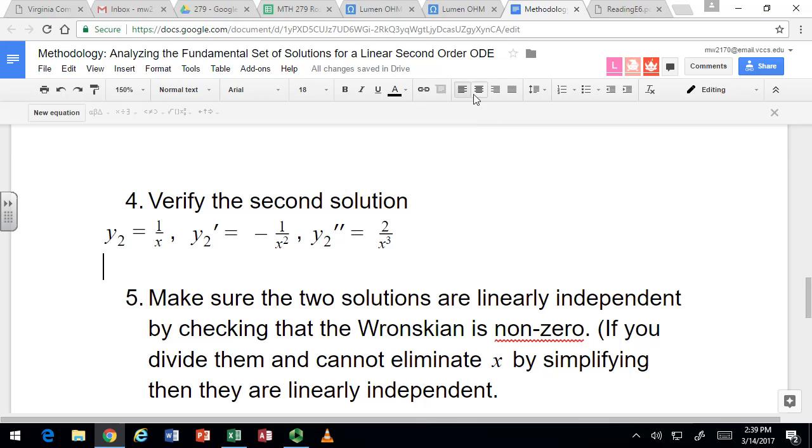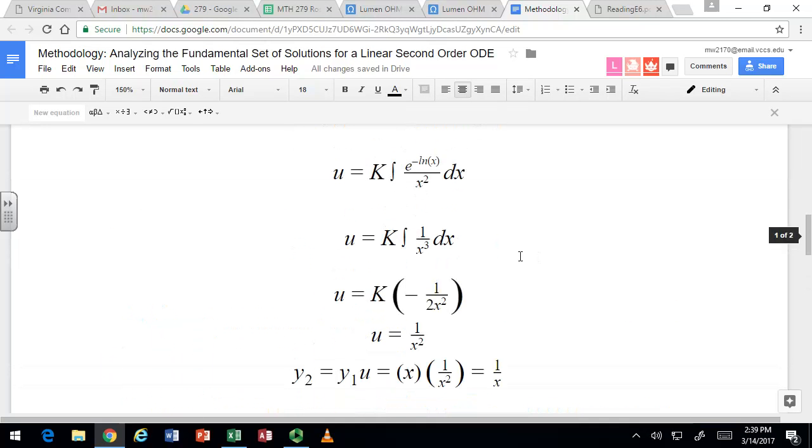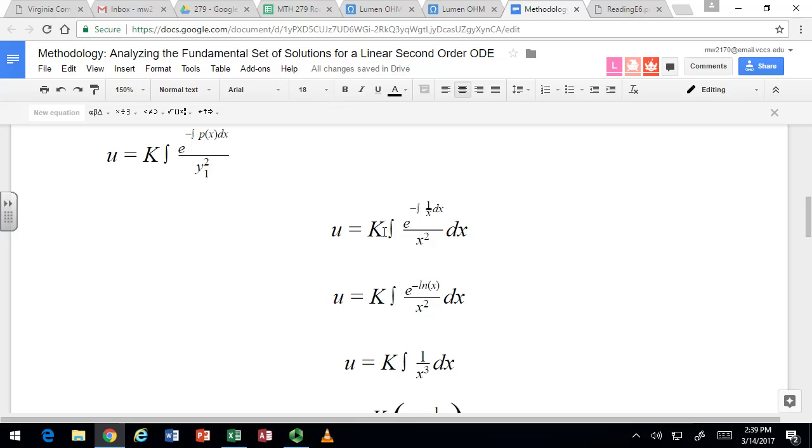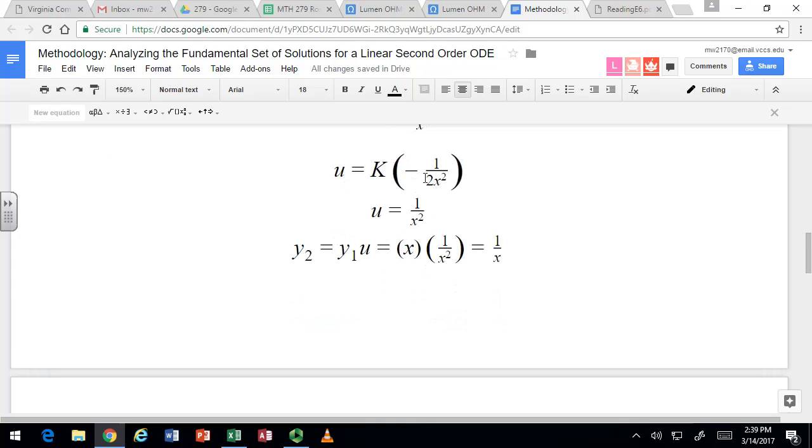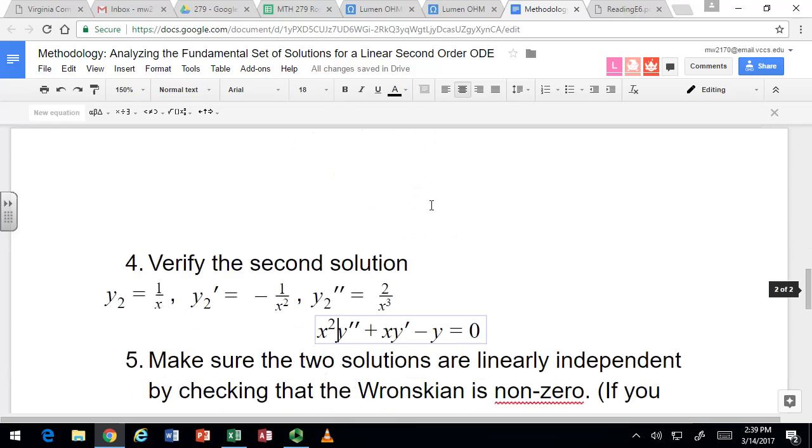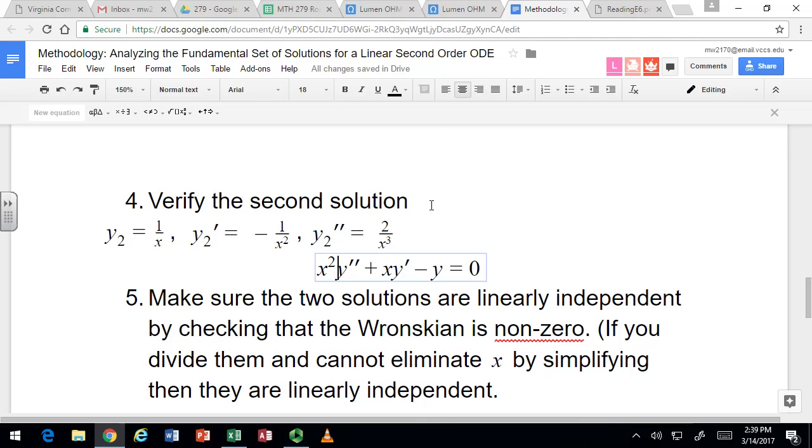Student asks: So for k, we can just make whatever we need to be as long as it's a constant? Instructor: Yeah. So it's good to wait till the end there and then see what you'd want to make it. I mean, for some people it would bother them, they could make it 1 to start off to make it go away. But then they'd be stuck with this -1/2 here, which wouldn't really be a problem.